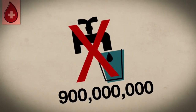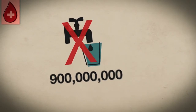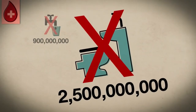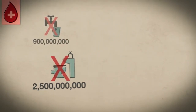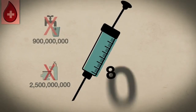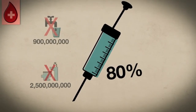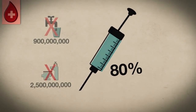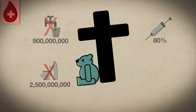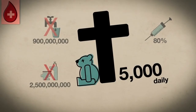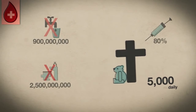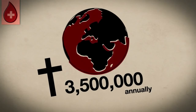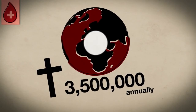But still, 900 million people do not have access to safe drinking water, and in other areas reality is still bad. 2.5 billion people have no access to sanitation. The World Health Organization estimates that 80 percent of diseases in developing countries can be traced back to inadequate water supply and sanitation. UNESCO estimates that about 5,000 children die every day as a result. Overall, about 3.5 million people die every year due to lack of clean drinking water.